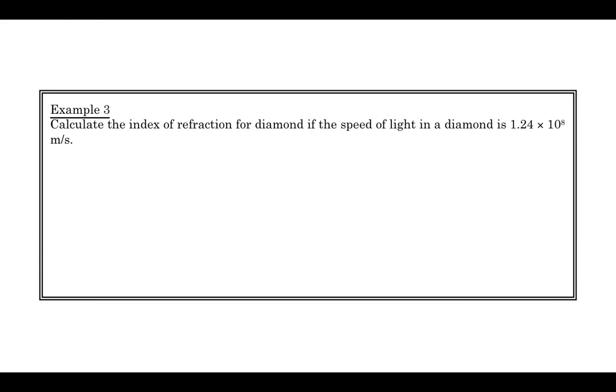Alright, so let's do an example here. Calculate the index of refraction for diamond if the speed of light in diamond is 1.24 times 10 to the eighth meters per second. Diamond is very optically dense.